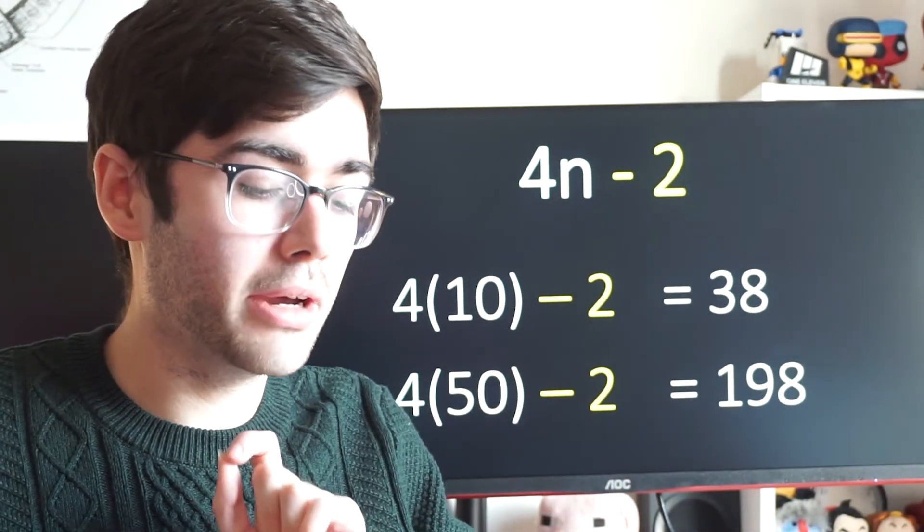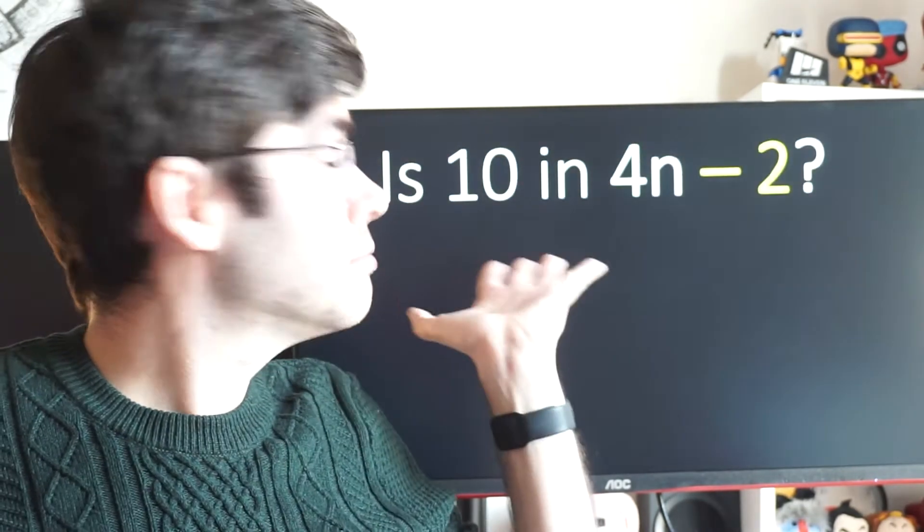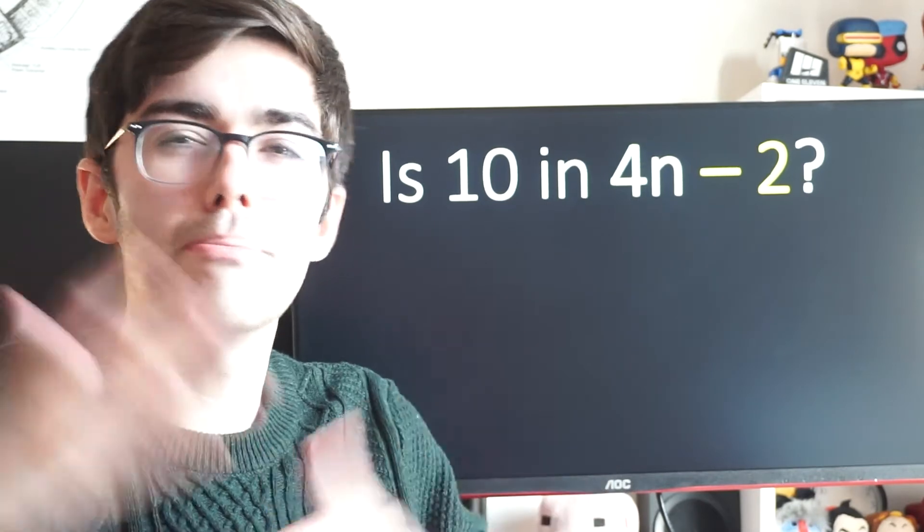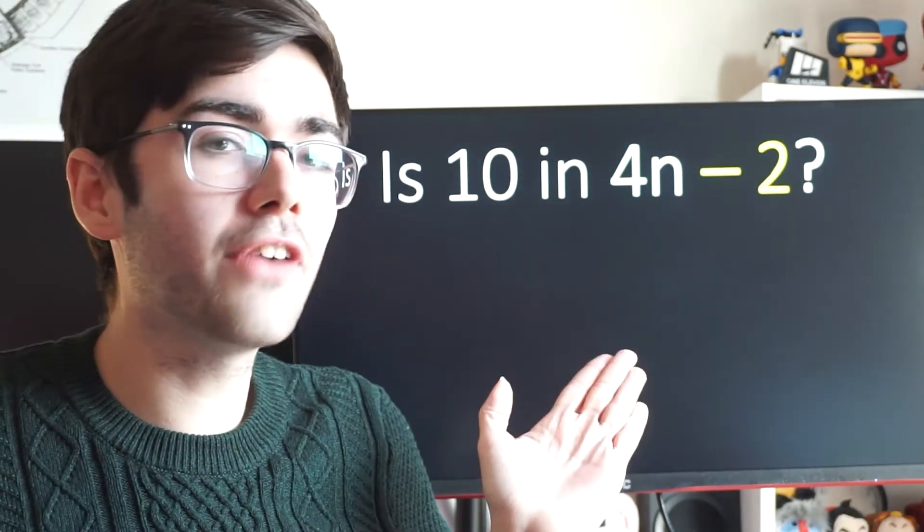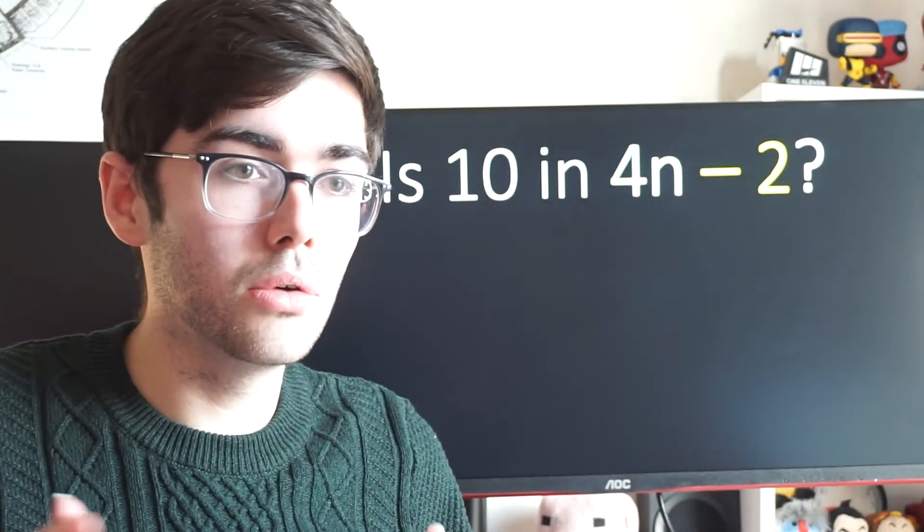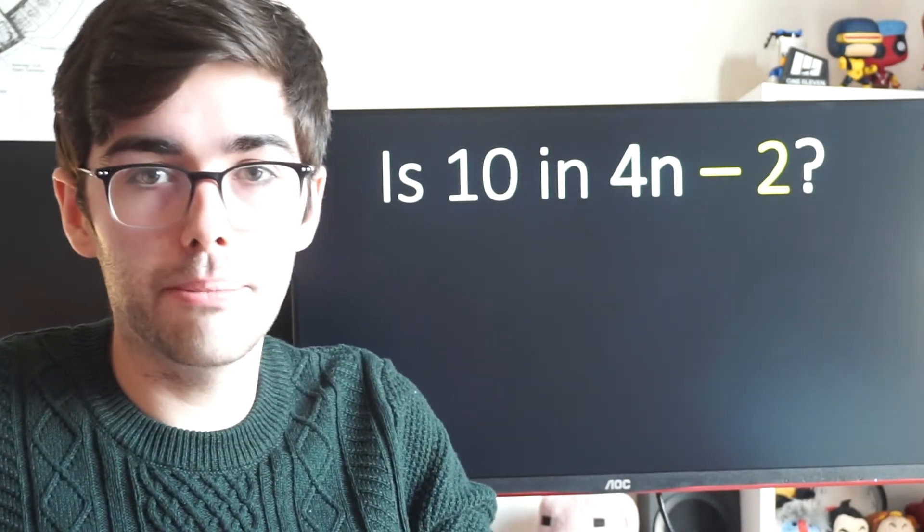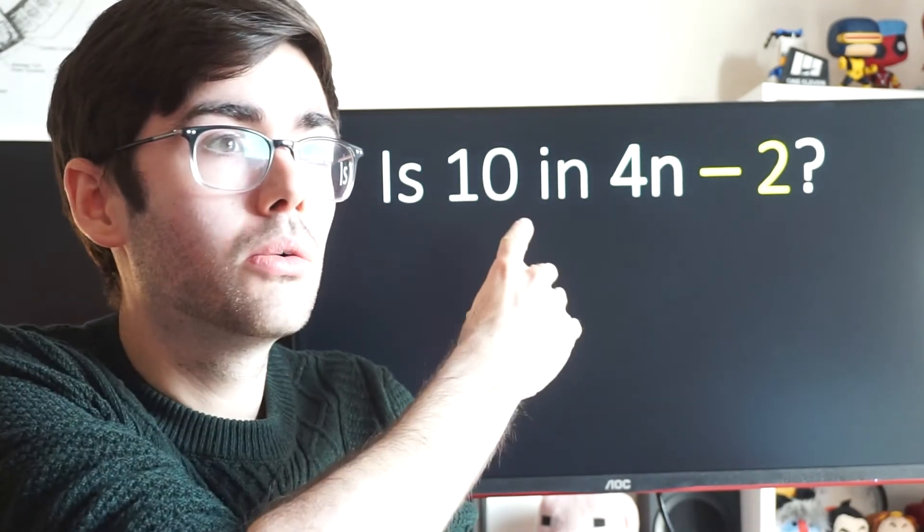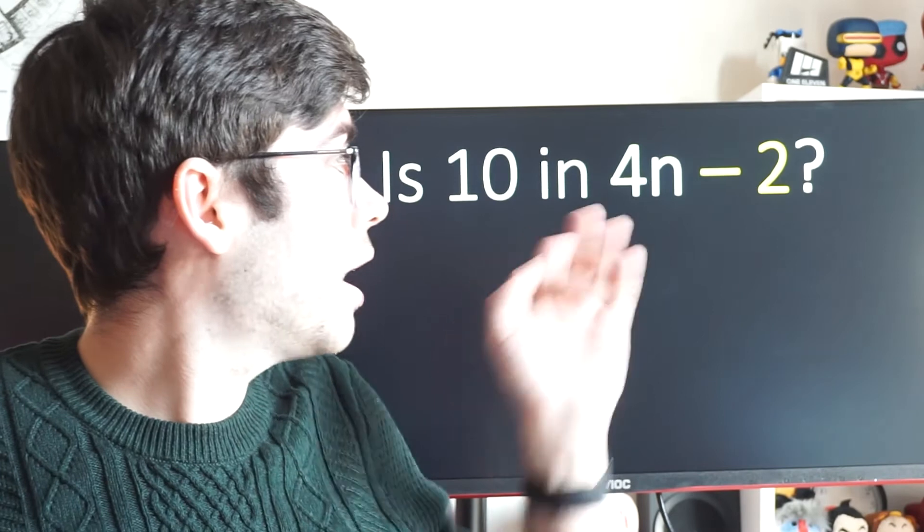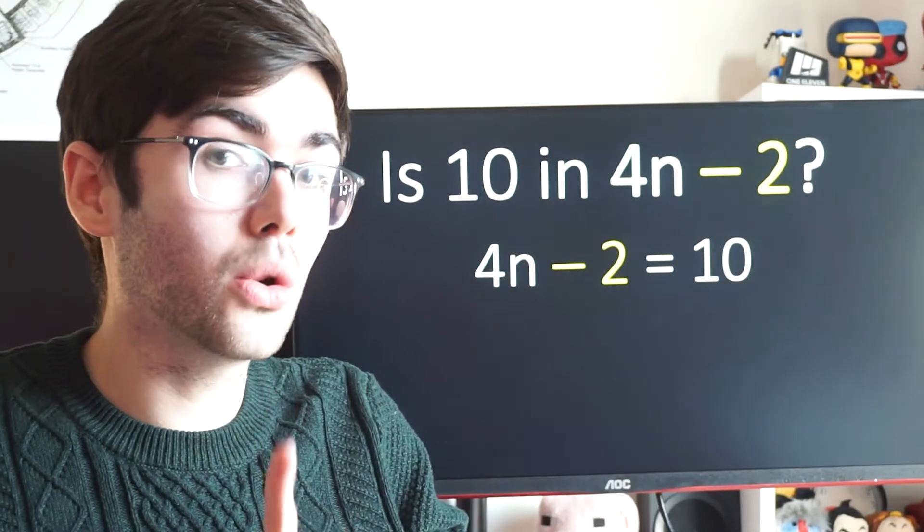One more thing we might get asked. Is 10, for example, in that sequence? Is one of the numbers in that sequence going to be 10, or is it going to miss 10? The way we find out is if 10 is in the sequence, then 4n minus 2 will equal 10 at some point. Some number that you put in will give you 10 as an answer, like we just did. So, I can set that equal to 10 like an equation.